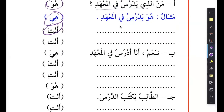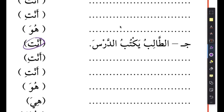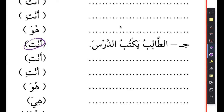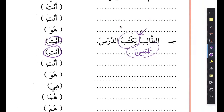This goes into the same exercise we had previously, going through all of the pronouns. For example, you have at-talibu yaqtubu darsa - the student is writing the lesson. But if instead of at-talib you say anta, what do you say? Anta tadubu darsa. And how do you say anti? Change this verb - tadubu bina. Excellent - anti tadubu bina darsa, you are the one who is writing the lesson.